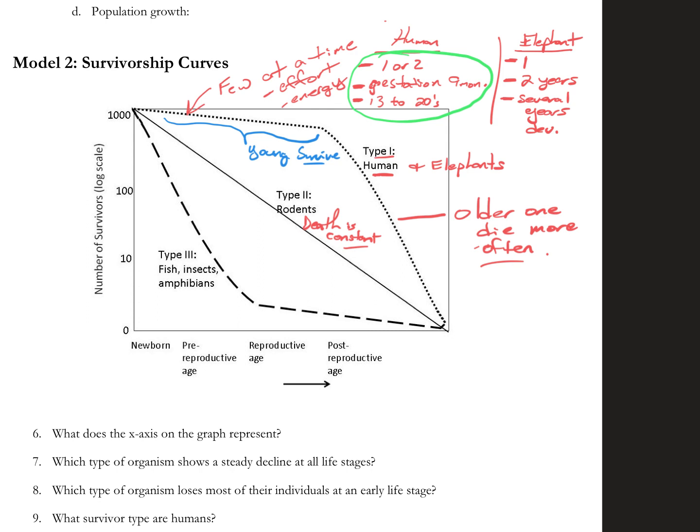When we're talking about type III with fish, they're extremely the opposite direction. In fish, they make 10,000 eggs, 10,000 baby fish, and a lot of them die. Most of them die quickly. They get eaten very quickly.